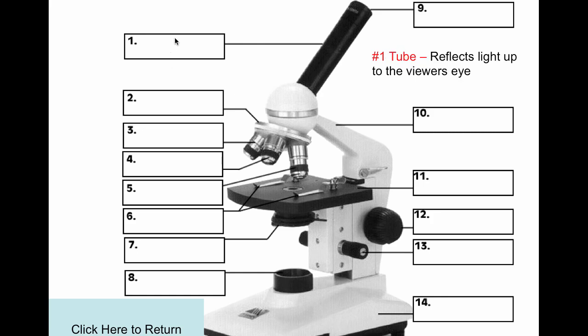Number 1 on the top left is called the tube. It reflects light to the viewer's eye. Number 2 is called the nose piece, also known as the rotating nosepiece. It allows for quick change of the objective lenses.